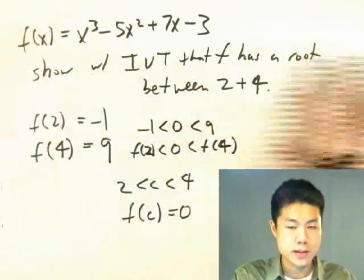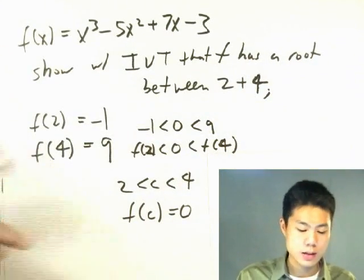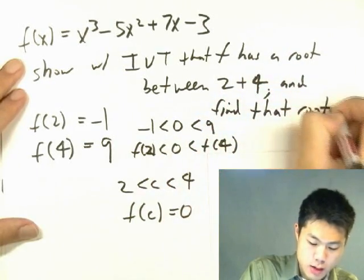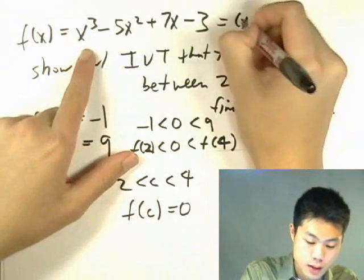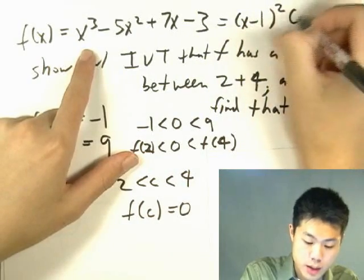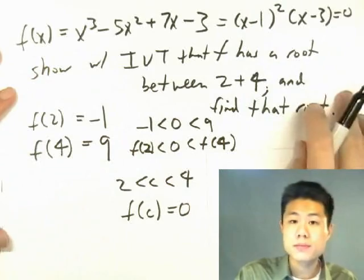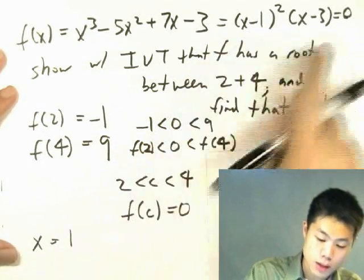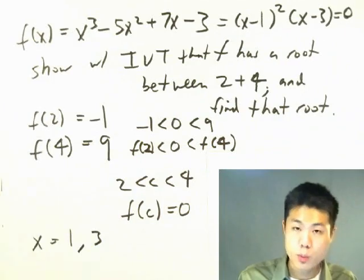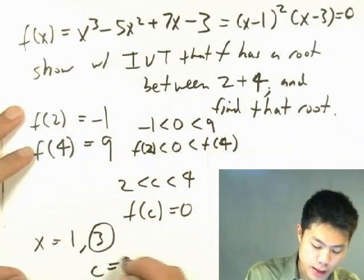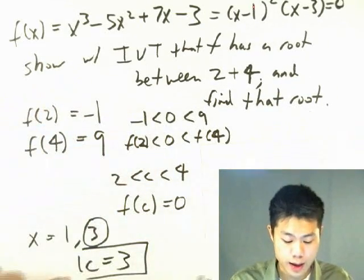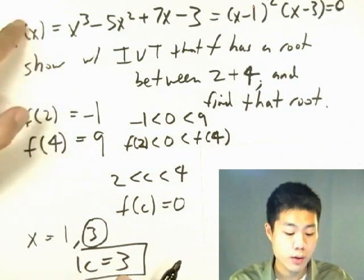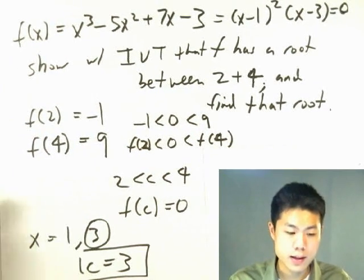So you can think of the Intermediate Value Theorem as a guarantee — there is guaranteed to be at least one root between 2 and 4. Now there's usually a second part to these questions: find the root. We factor the function, which comes out to be (x - 1)² (x - 3). Setting this to zero, the roots are x = 1 and x = 3. We want the value between 2 and 4 — so our c value is 3. And is this c value between 2 and 4? Yes. And f(c) = f(3) = 0. Therefore, 3 is a root of the function between 2 and 4.